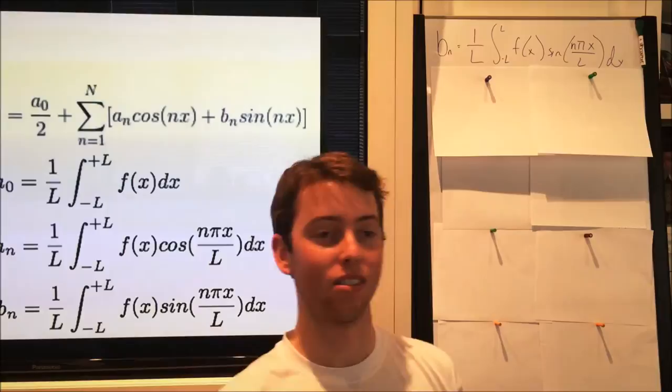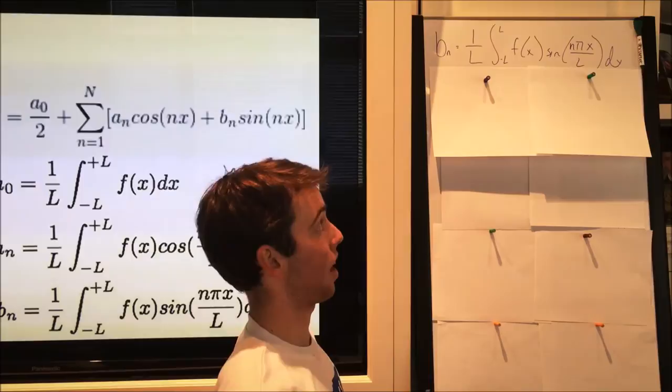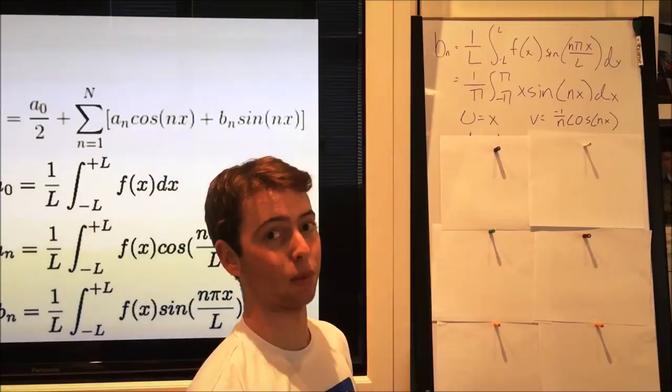Now we will solve for b_n. b_n equals 1 over L times the integral from negative L to L of f of x sine of nπx over L. To begin, we plugged in for L. L is equal to half the period, so it is equal to π.